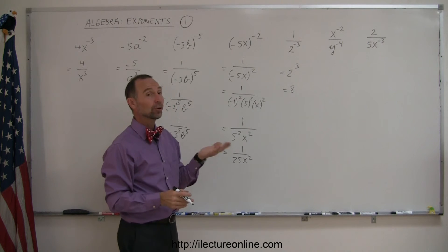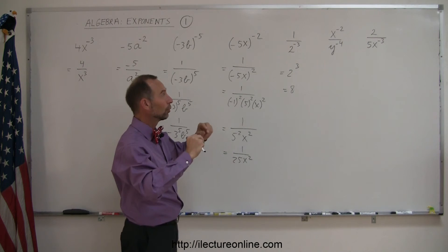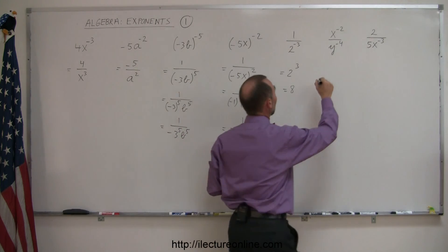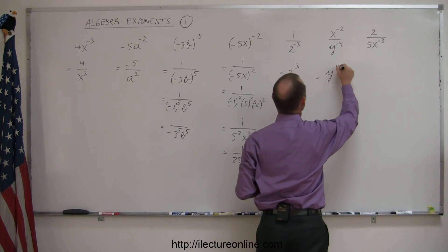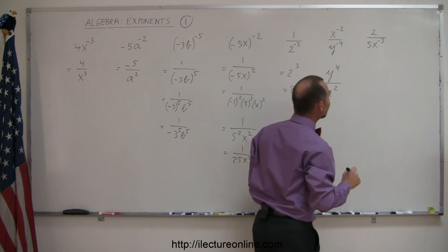Next example, we have a negative exponent in the numerator and a negative exponent in the denominator. So we can apply the rule at the same time for both the numerator and the denominator by switching the x and the y, so this can now be written as y to the positive 4 power in the numerator, divided by x to the positive 2 in the denominator.